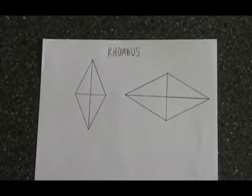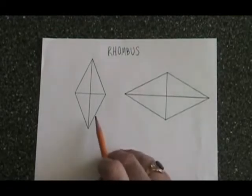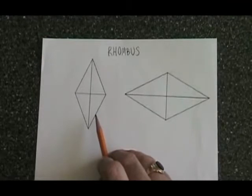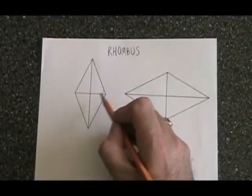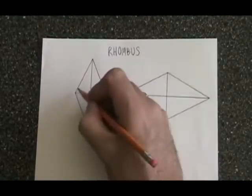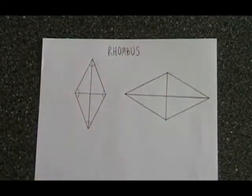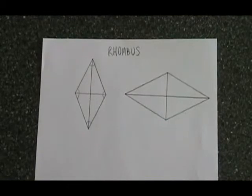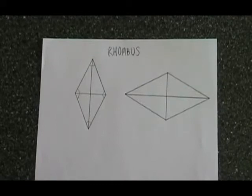The properties of a rhombus are similar to the properties of a square. A rhombus is a quadrilateral, and like all quadrilaterals, the four angles on the inside, if you add them up, they have to add up to 360 degrees. A rhombus has four sides that are equal in length, which is the same as a square. But this is where the difference ends.